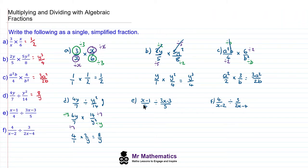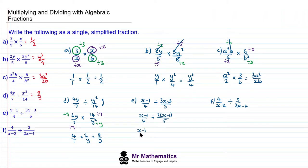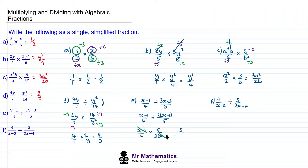For question E, the first thing I'm going to do is factorize the expression. We have x minus 1 over 4 divided by 3 lots of x minus 1 over 5. We can write this as a multiplication: x minus 1 over 4 multiplied by 5 over 3 lots of x minus 1, which is the reciprocal. The common factor of x minus 1 cancels, leaving 5 over 4 times 3, which is 12. So x minus 1 over 4 divided by 3x minus 3 over 5 simplifies to make 5 over 12.